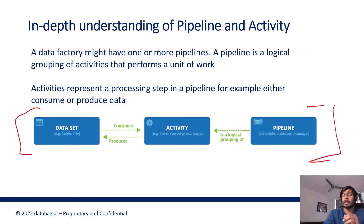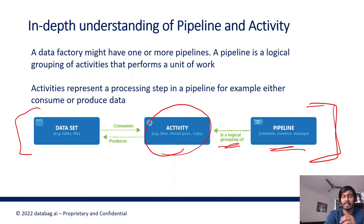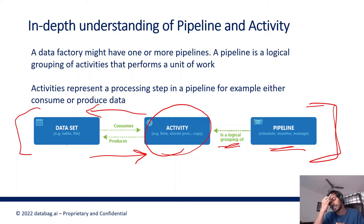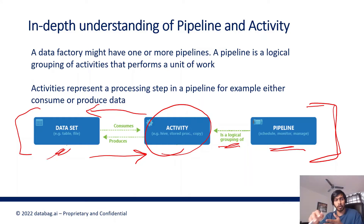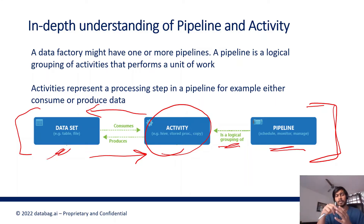You need to understand the main difference between a pipeline and an activity. You create a pipeline, which is a logical group of activities, and the activity communicates with the dataset — either you produce a dataset to the sink or destination, or you consume the dataset from the source to make some transformations. A dataset refers either to a table or a file. If you don't know the difference between a dataset and a linked service, I'd recommend going to video series part two.